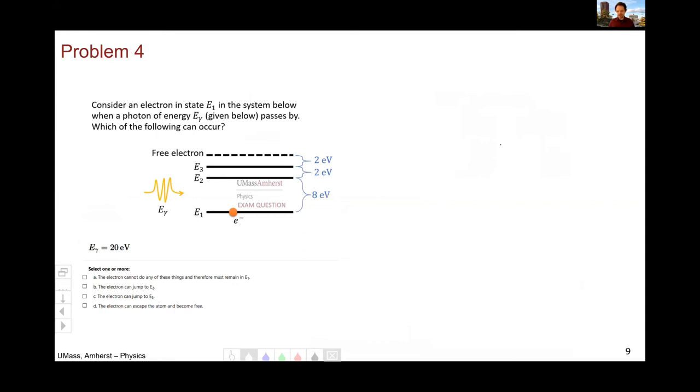Problem 4, we had the electron sitting in E1 and we had a photon with some amount of energy, which was bigger than 12 EV in all cases, come in. The electron could then absorb this energy and become free with some amount of kinetic energy. In my case, since it's 20 EV and all of these add up to 12, my electron would become free with 8 EV of kinetic energy. So that's what would happen. It is an understandable mistake about the idea of kinetic energy, and so some partial credit was given for just remaining in E1.